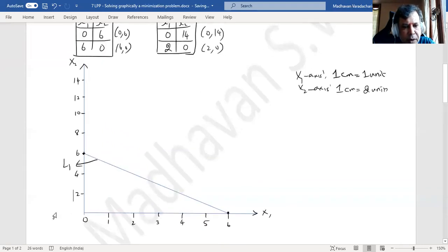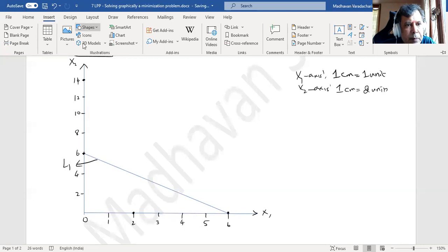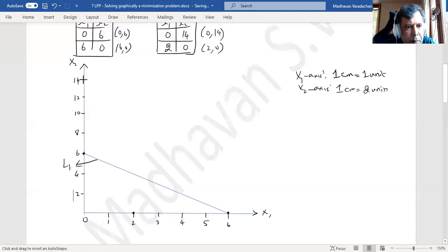x₁ is 0, x₂ is 14, point will be here. x₁ is 2, x₂ is 0, point will be here. Let me join these two points. This is our line two.